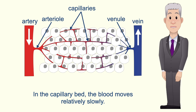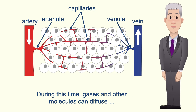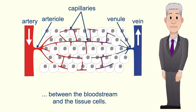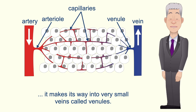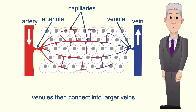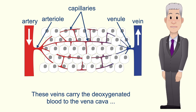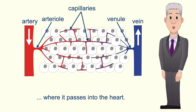In the capillary bed the blood moves relatively slowly. During this time gases and other molecules can diffuse between the bloodstream and the tissue cells. Once the blood has passed through the capillary bed it makes its way into very small veins called venules. Venules then connect into larger veins and these veins carry the deoxygenated blood to the vena cava where it passes into the heart.